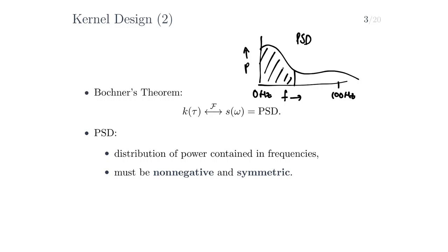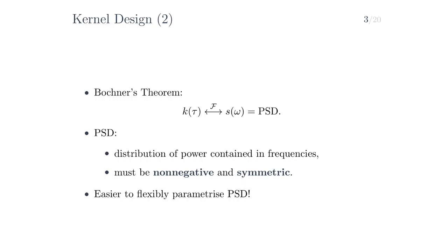The only requirement that a power spectral density has to satisfy is that it must be non-negative and symmetric. These requirements are much simpler than that of the kernel, which is positive definiteness. So, if we aim to very flexibly parameterize a kernel but we don't know how to directly flexibly parameterize a positive definite function, why don't we parameterize the power spectral density instead? We'll be looking at a number of approaches that do so.